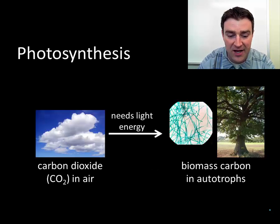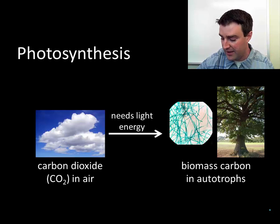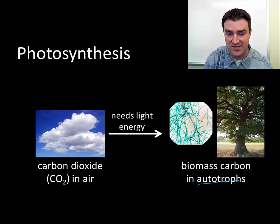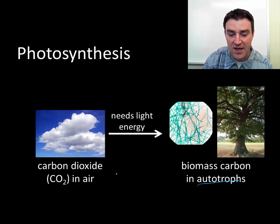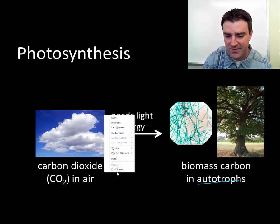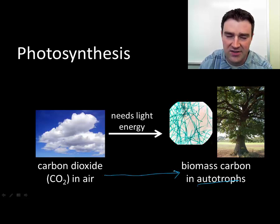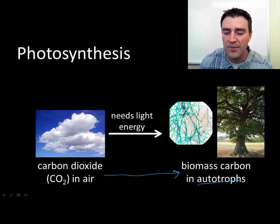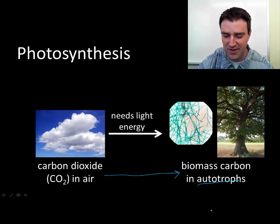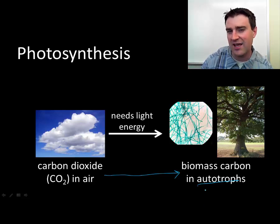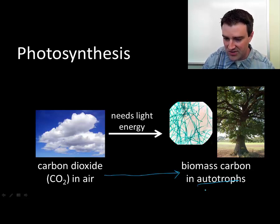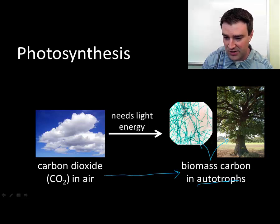Carbon dioxide in the air can enter living organisms, but only autotrophs can do this. This conversion process is called photosynthesis. Very broadly, this process takes carbon dioxide out of the air and converts it into a solid, becoming biomass. Technically it becomes sugar or glucose, but here I just want to think about whether carbon is inside the body of a living plant.